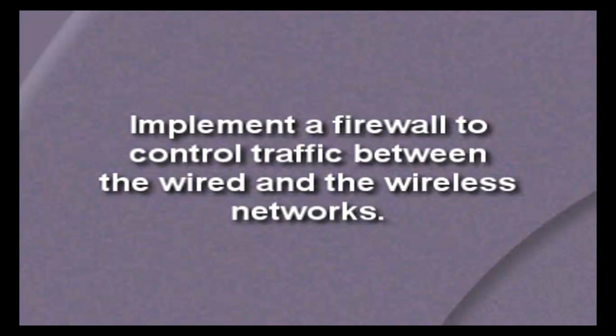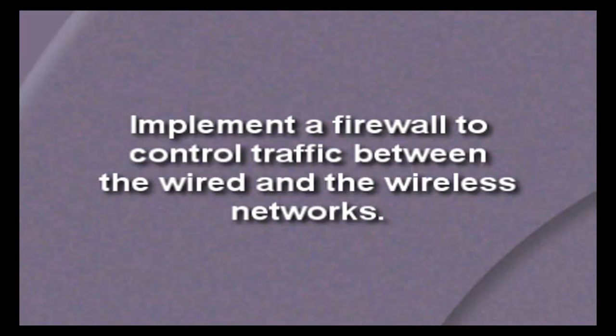Another thing you ought to do is enable the WAP firewall. Most wireless access points come with a built-in firewall designed for connecting the wireless network to another network — whether a DSL connection, cable modem, or corporate Ethernet network. You can enable a firewall on the wireless access point that will prevent unauthorized traffic from coming in from the wired network into the wireless network, and likewise control traffic out of the wireless network onto the wired network.